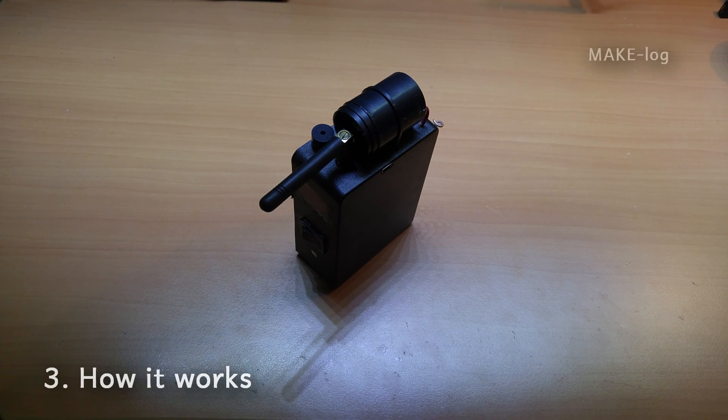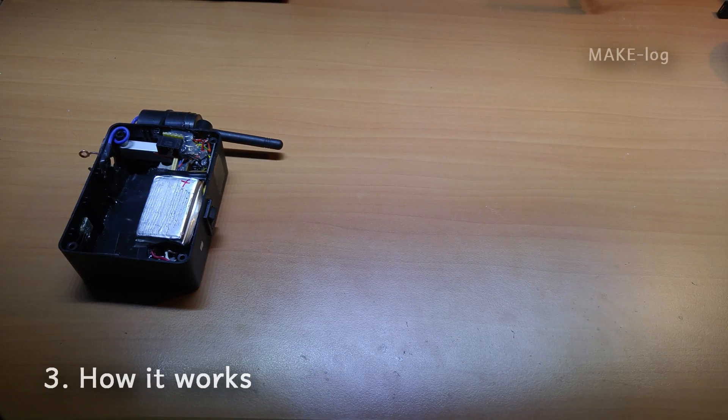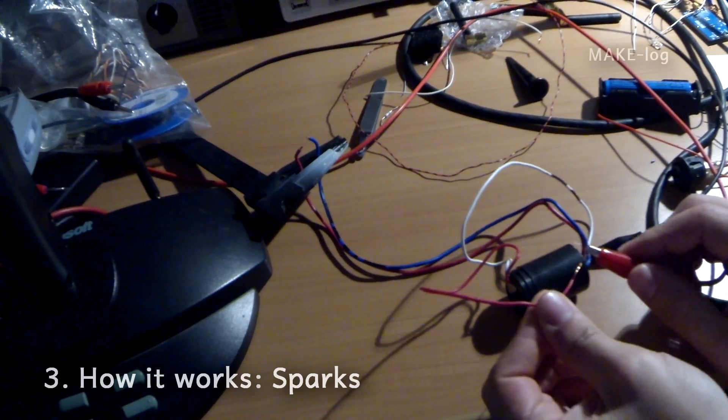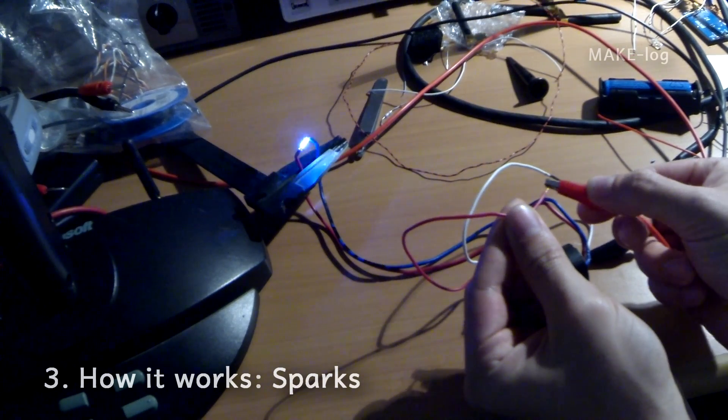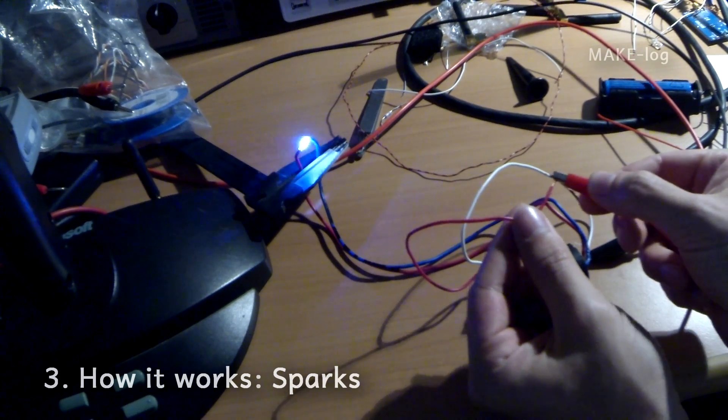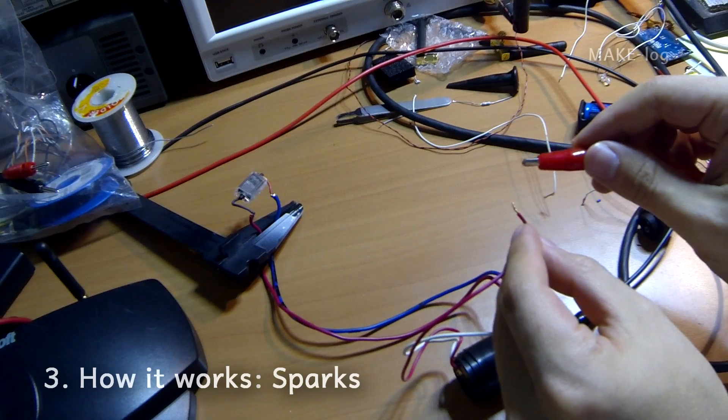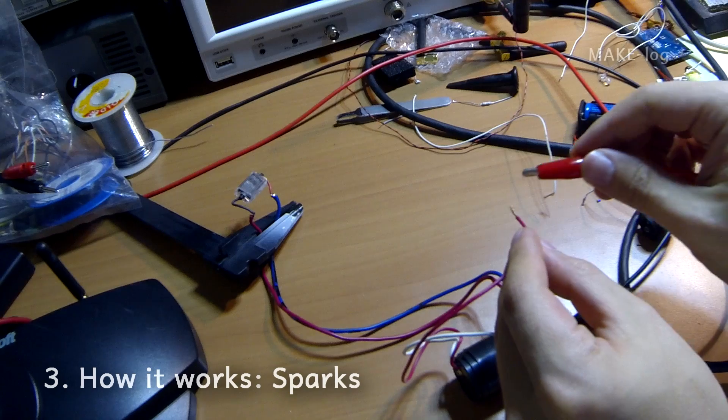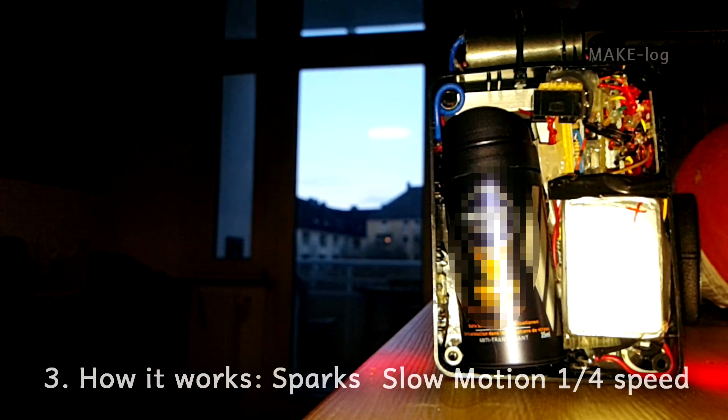In previous videos, some people have asked me how my things work. I would like to focus on that in this chapter and have a more detailed look at the components used. One component is a high voltage coil, which is unfortunately not sold anymore. By applying power to one end, you get a high voltage at the other end. You can also use that coil to light up xenon lamps from camera flashes, for example. In my case, I used the spark to ignite the spray coming out of a spray can.